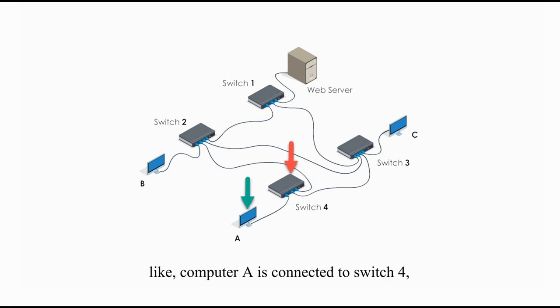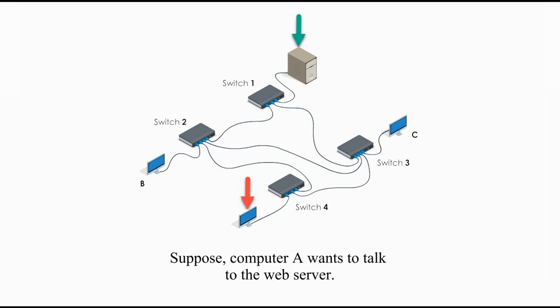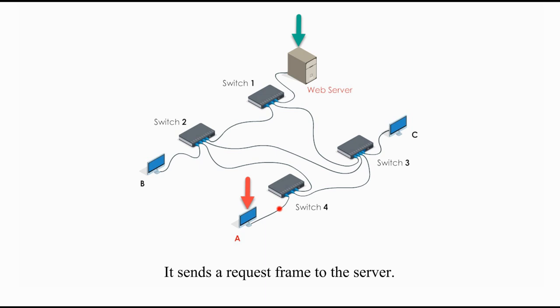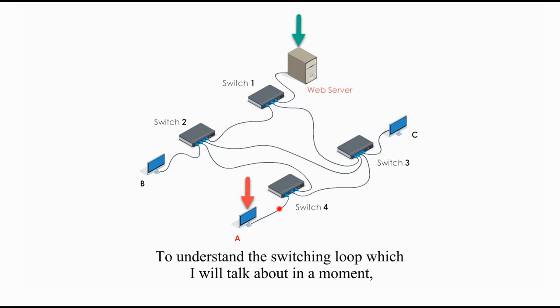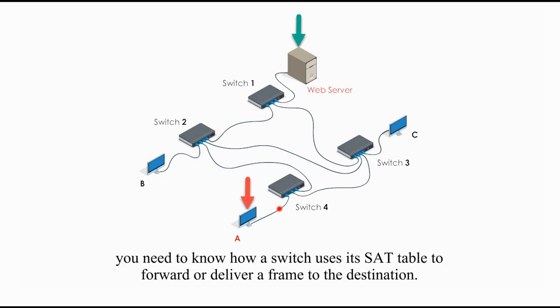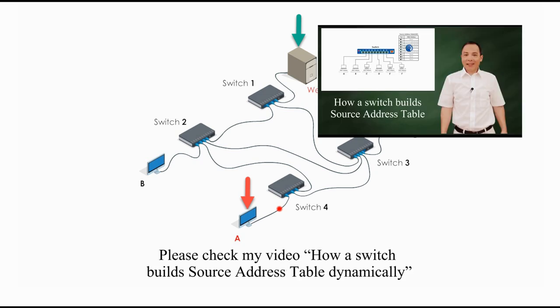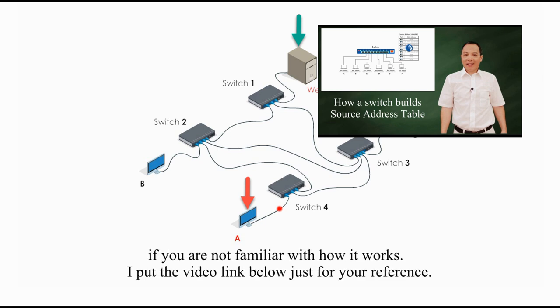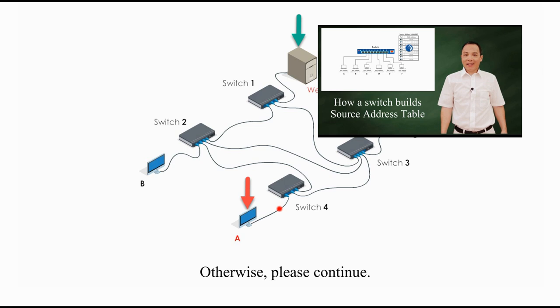A couple of devices are connected to those switches, like computer A is connected to switch 4, and web server is connected to switch 1. Suppose computer A wants to talk to a web server. It sends a request frame to the server. To understand the switching loop, which I will talk about in a moment, you need to know how a switch uses its set table to forward or deliver a frame to the destination. Please check my video, How a switch builds source address table dynamically, if you are not familiar with how it works. I put the video link below just for your reference. Otherwise, please continue.